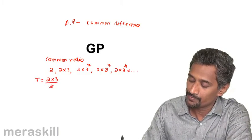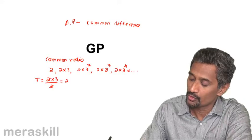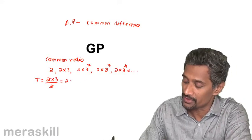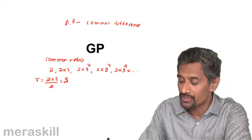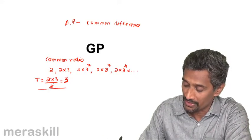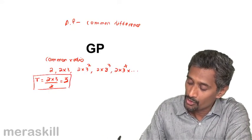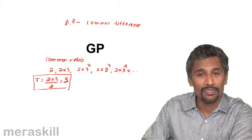Which will be 3, or 2 into 3 squared by 2 into 3, which is also—sorry, this is 3, or 2 into 3 squared by 2 into 3, which is also 3. So the common ratio concept. So this is what you have in the case of a geometric progression.